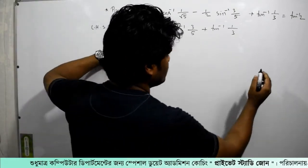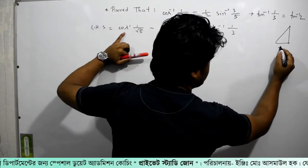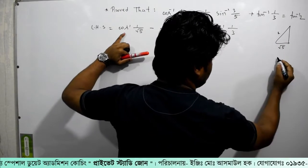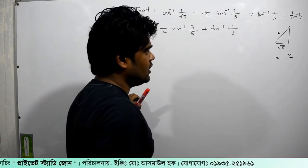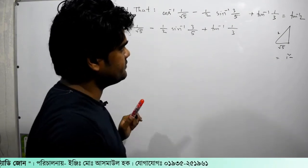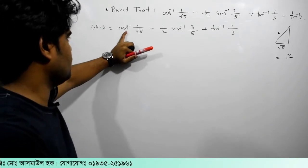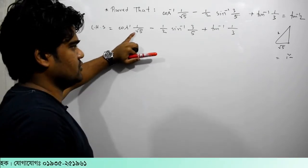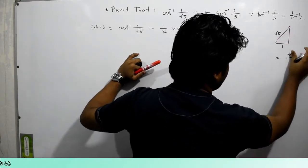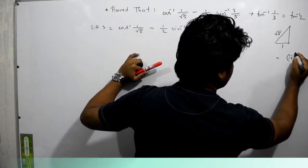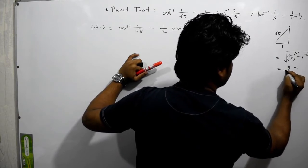We will convert this cos inverse. The problem involves 3 by root 5 and 2 by root 5. We will convert the same thing: 1 squared minus, and cos inverse of 1 by root 5 is equal to 2 by root 5. We won't say 1 by root 5 — instead, we use the identity with the square root.